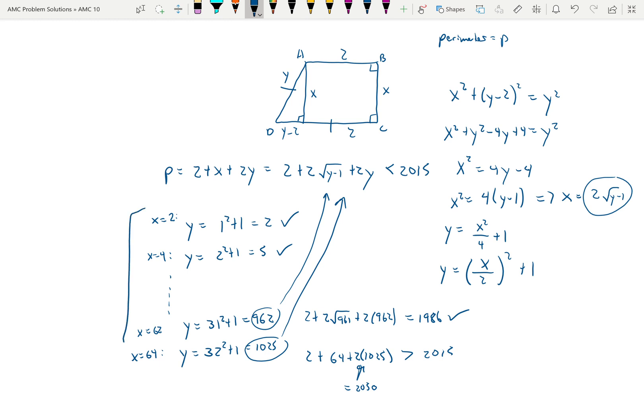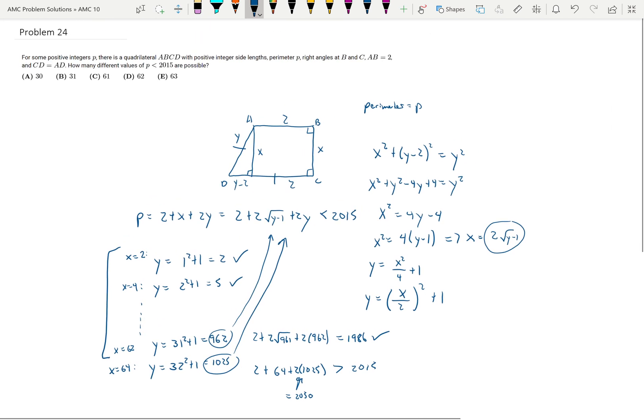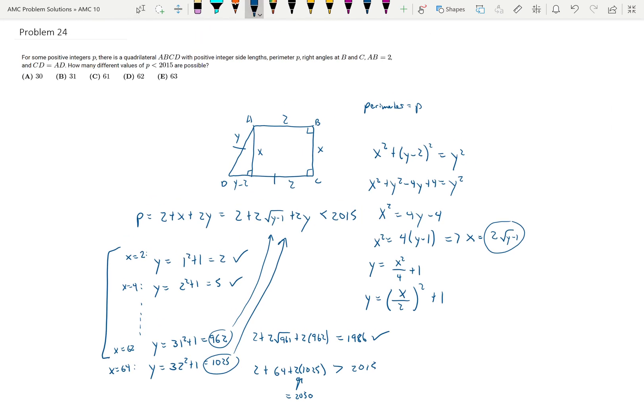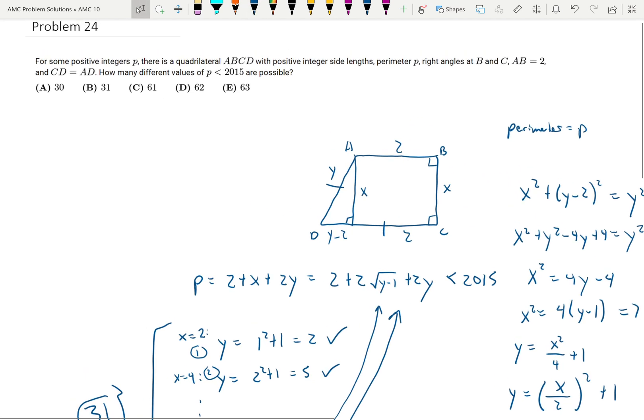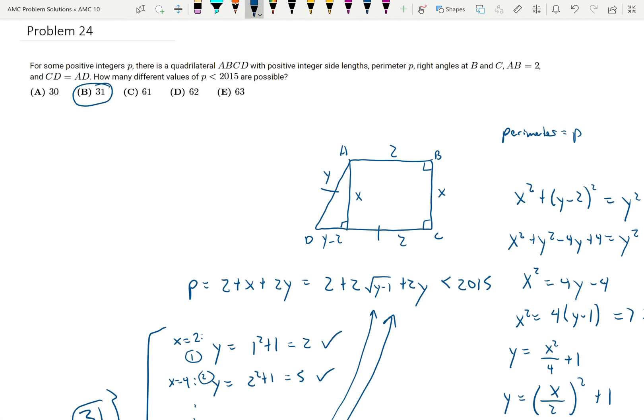So all of these Y values are going to work. So therefore, this is the first, the second possibility for the perimeter, and then all the way to the 31st possibility for the perimeter. So there are 31 possibilities for P. So the answer is choice B, 31.